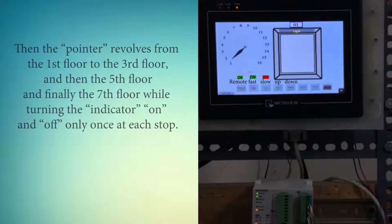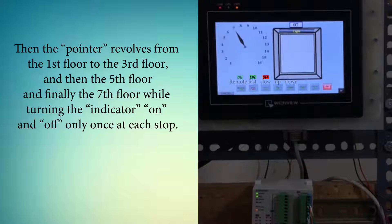Then the pointer revolves from the first floor to the third floor, then the fifth floor, and finally the seventh floor, while turning the indicator on and off only once at each stop.